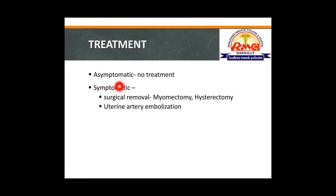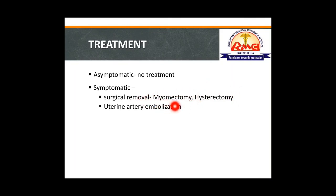For treatment: asymptomatic patients need no treatment. Symptomatic patients can have fibroids surgically removed (myomectomy — removal of fibroid only). If the patient is near menopausal age with severe symptoms, hysterectomy may be considered. Uterine artery embolization is another option, and gonadotropin-releasing hormone analogues can be given to decrease fibroid size.